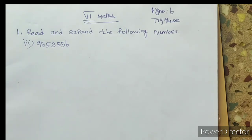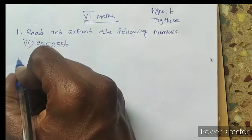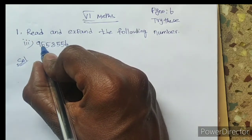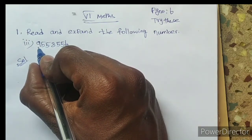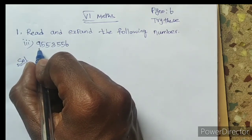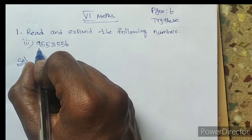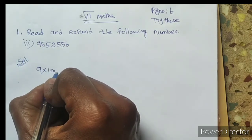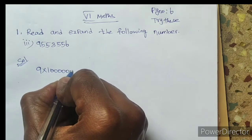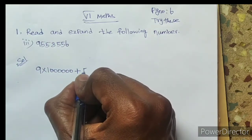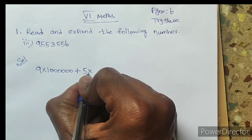Write this in expanded form. First count the digits: ones, tens, hundreds, thousand, ten thousand, lakh, ten lakh. So here ten lakh has how many zeros? Six zeros. So nine is in ten lakh place: 9 × 10 lakh, that's six zeros. Plus five is in lakh place: 5 × lakh, one, two, three, four, five.